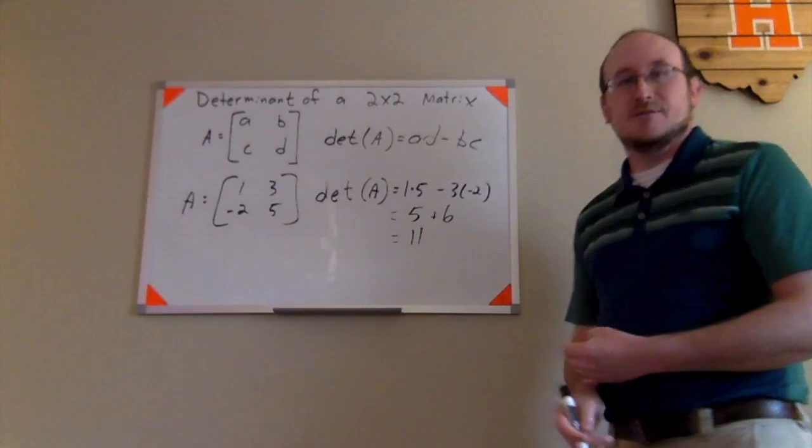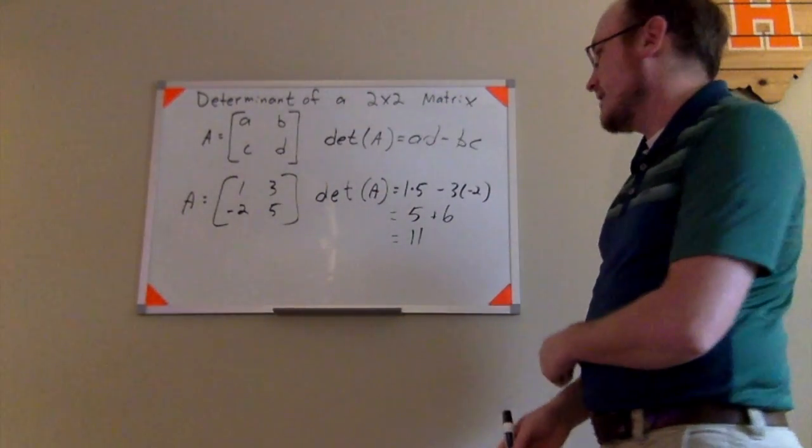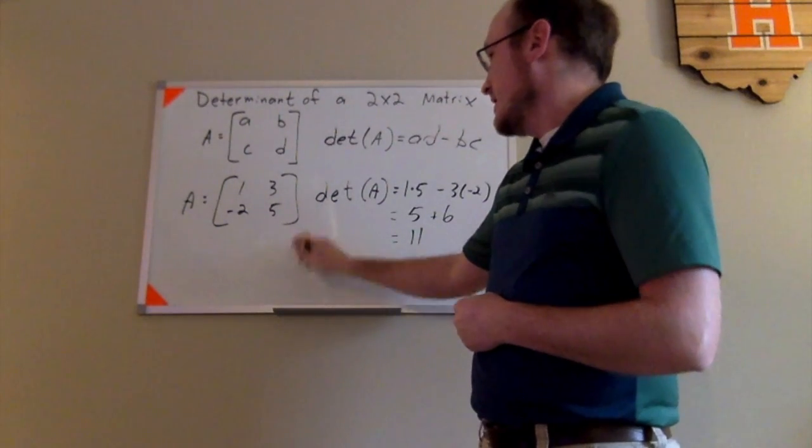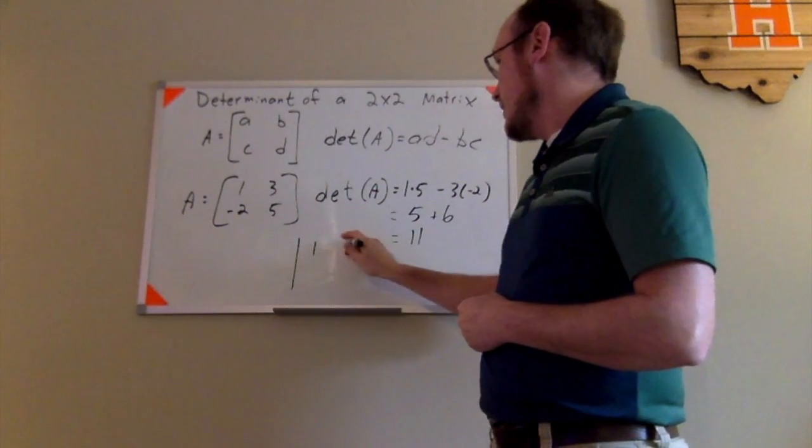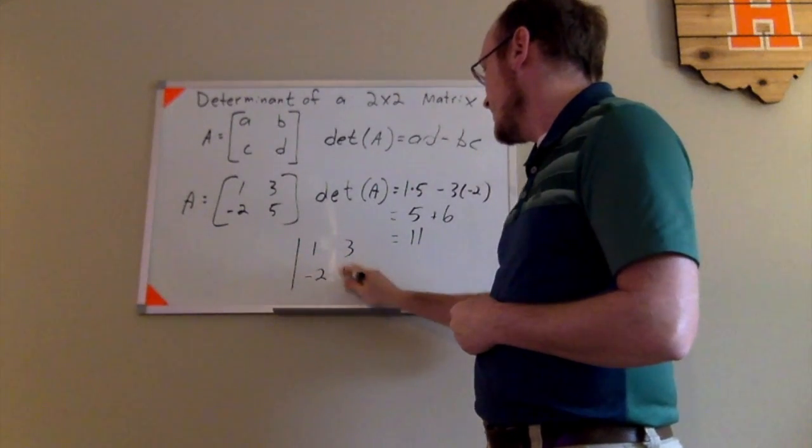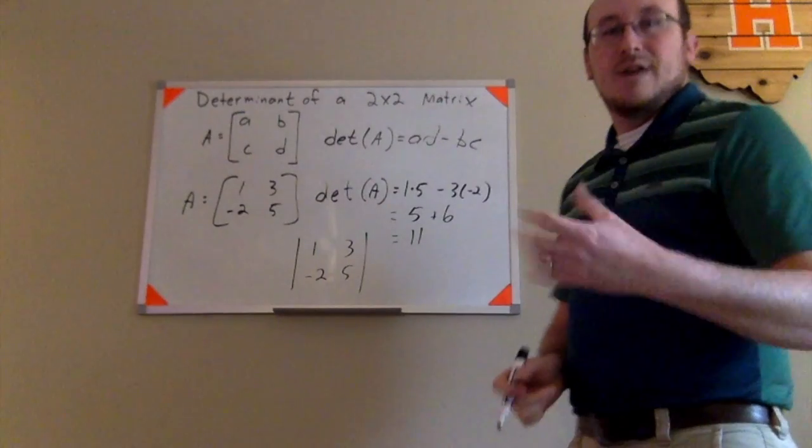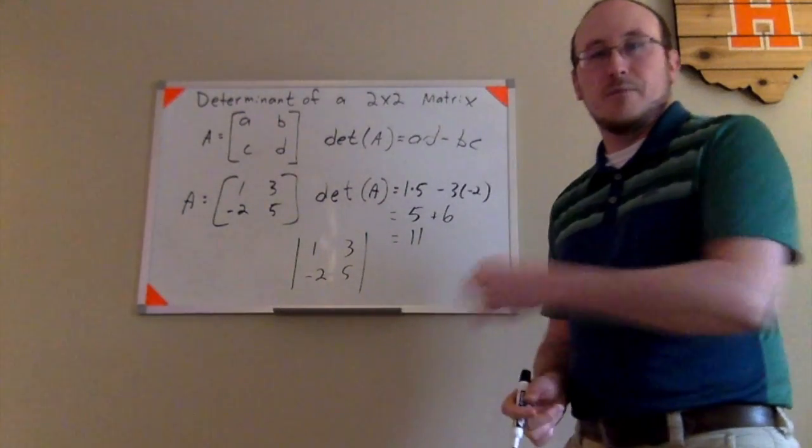So the determinant of this is actually equal to 11. I'm going to go ahead and show another notation here really quick as well. If you see these vertical bars, 1, 3, negative 2, and 5, around a rectangular arrangement of numbers, that is asking you to find the determinant of that matrix.